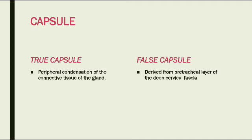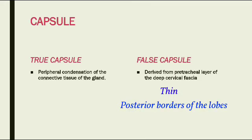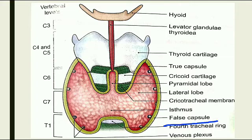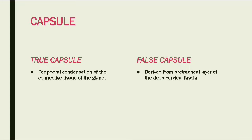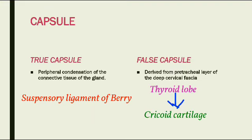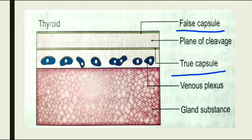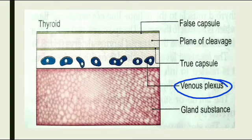The false capsule is derived from the pre-tracheal layer of the deep cervical fascia. It is thin on the posterior borders of the lobes, but thick on the inner surface of the gland, where it forms the suspensory ligament of Berry. The function of the suspensory ligament of Berry is to connect the thyroid lobe to the cricoid cartilage. Deep to the true capsule lies the deep capillary plexus.